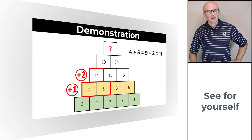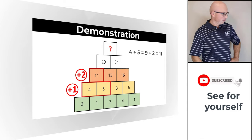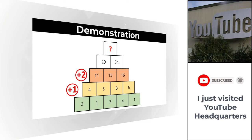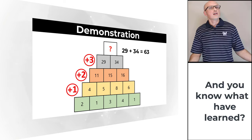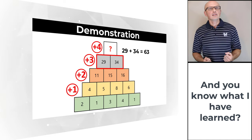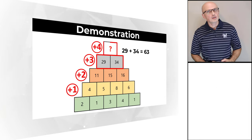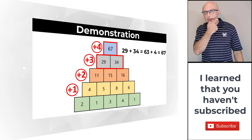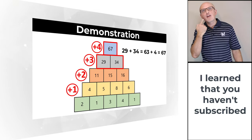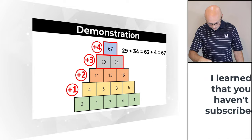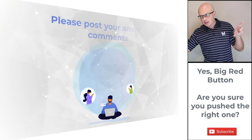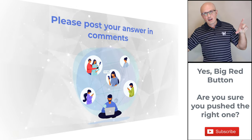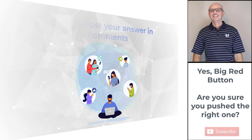Based on this, the missing value is calculated as 29 plus 34 plus the increment of 4, which equals 63 plus 4, which equals 67. So the correct choice is choice C: 67. Hopefully you've nailed this question and now know how to answer similar problems on the test.